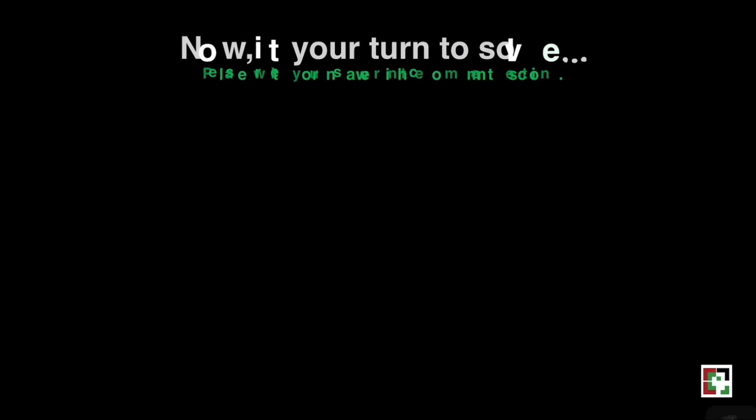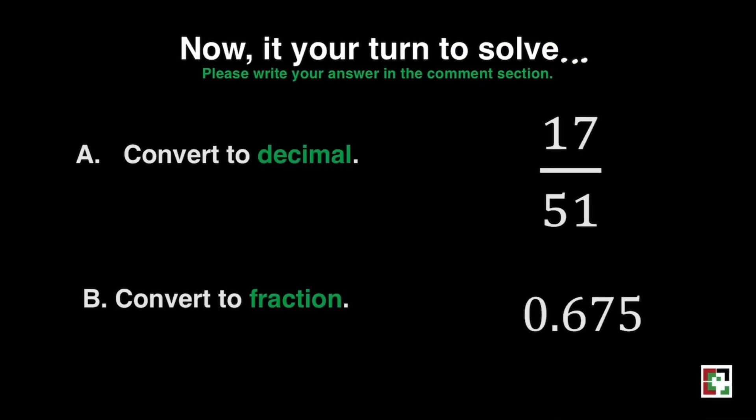Now, it is your turn to solve. Please write your answer in the comments section. For letter A, convert 17 over 51 to a decimal. For letter B, convert 675 thousandths to a fraction. I'll be waiting for your answer.